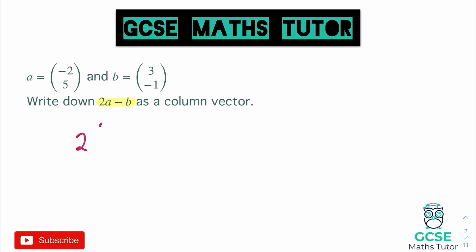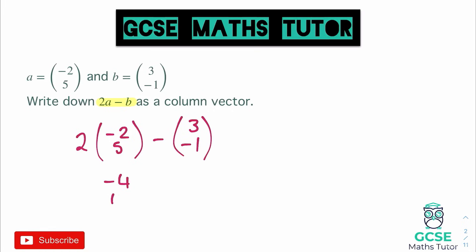We've got 2 lots of vector A, which is minus 2 and 5, and we're going to take away vector B, which is 3 and minus 1. Doubling vector A gives us minus 4 over 10, and we're going to subtract 3 over minus 1.